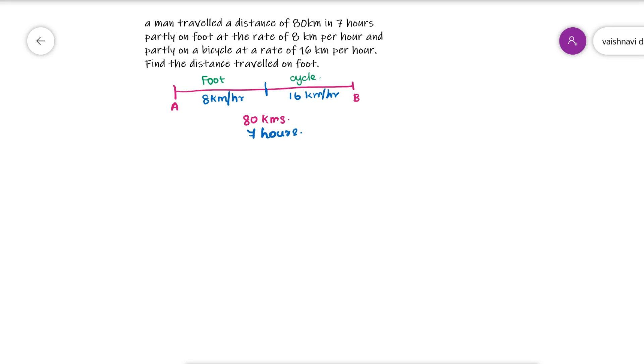Now I have to find the distance traveled on foot. I don't know what is the distance traveled but I have the speed. I don't know what is the time taken but I have speed. Now what they have given you is total distance and the total time taken.